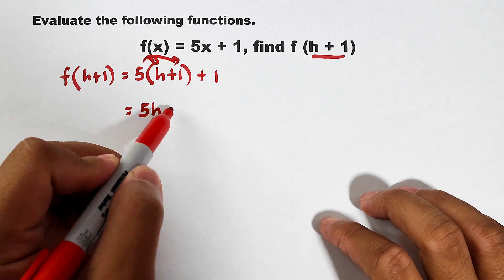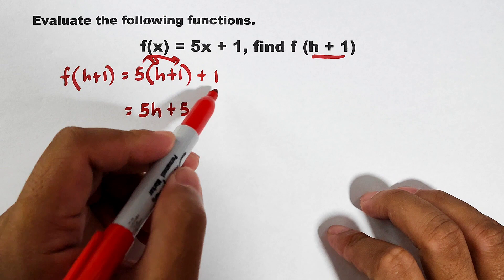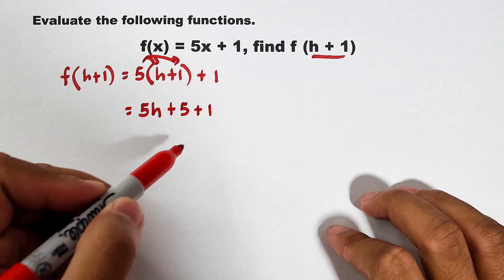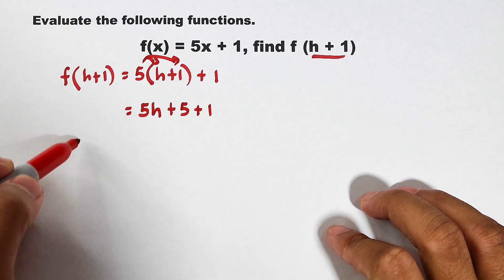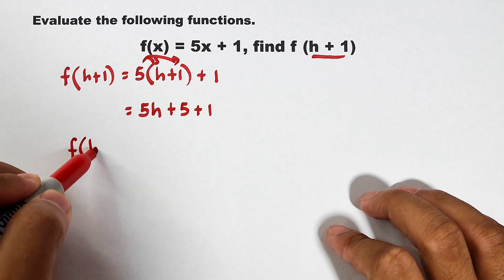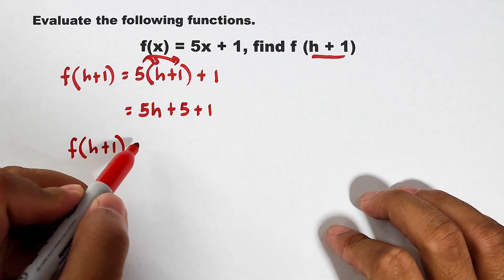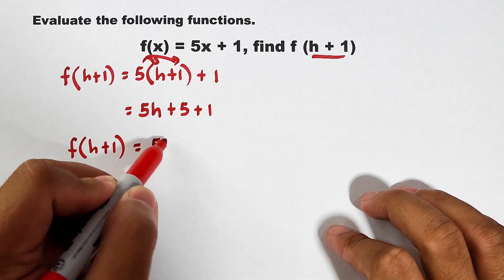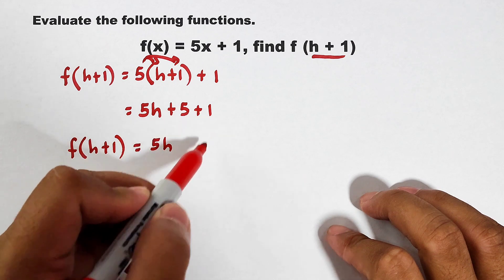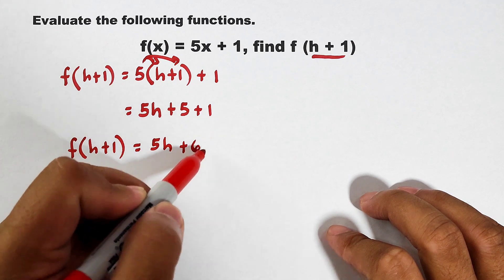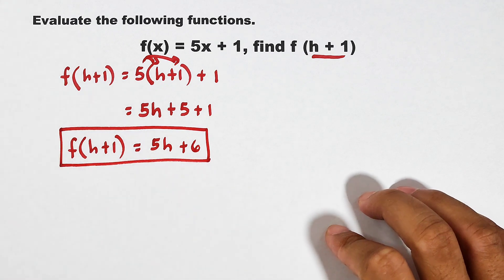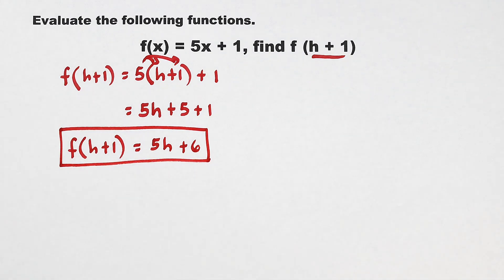Then 5 times 1, that is plus 5 and then copy plus 1. As you can see, copying f of h plus 1. This will become 5h, 5 plus 1 is 6.